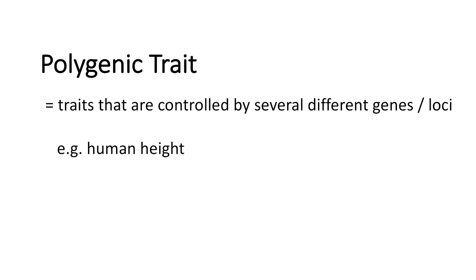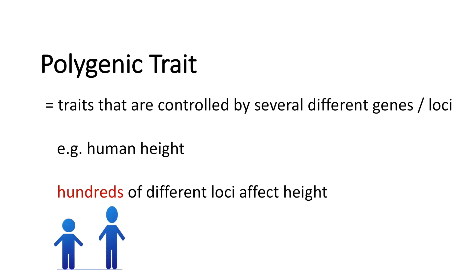The next term we will talk about is the polygenic trait. A polygenic trait is a trait that is controlled by several different genes or loci. We have human height as an example — scientists revealed that hundreds of different loci affect height, meaning it is pretty hard to do breeding experiments with polygenic traits.